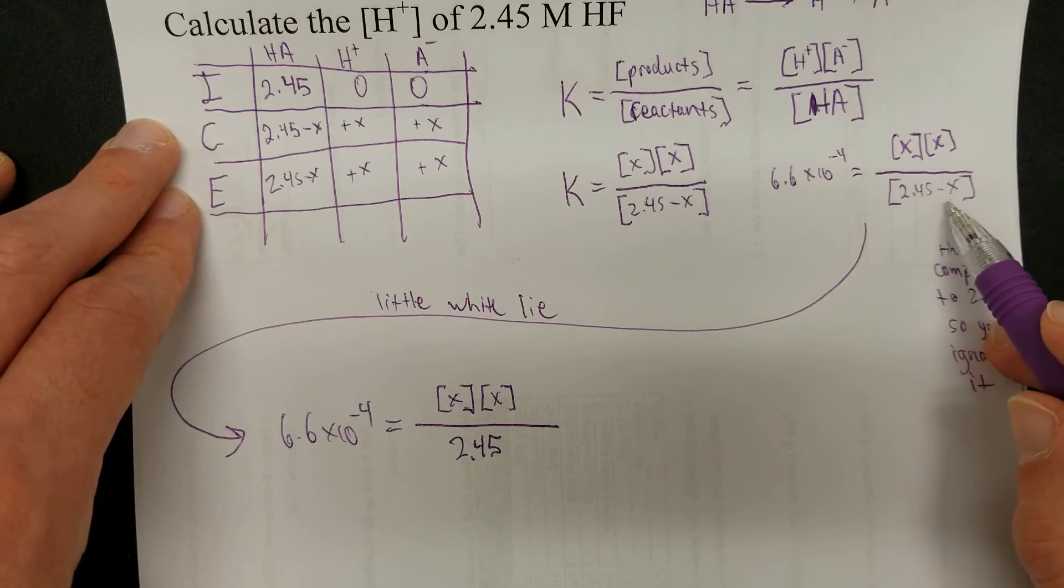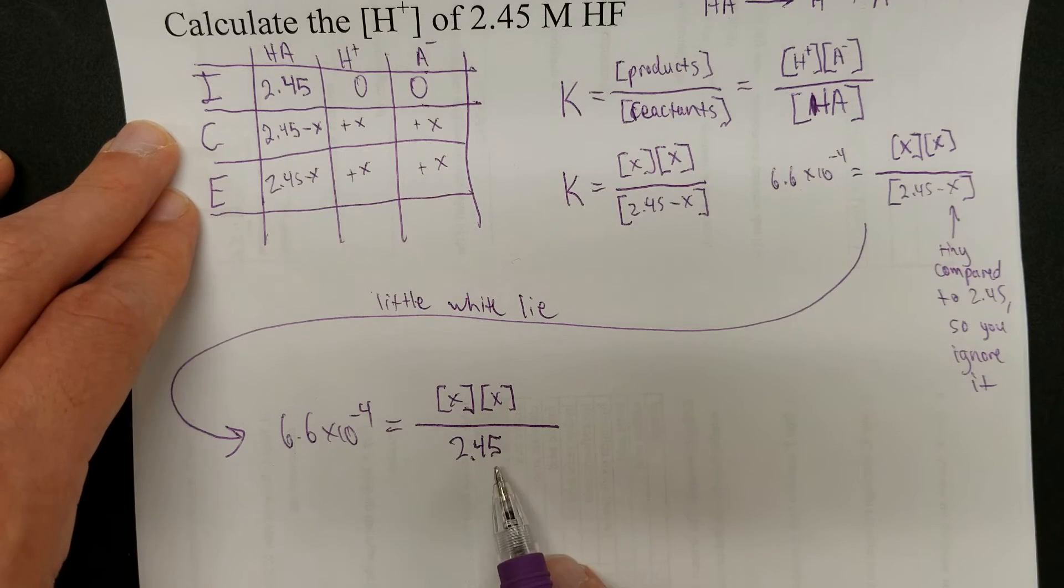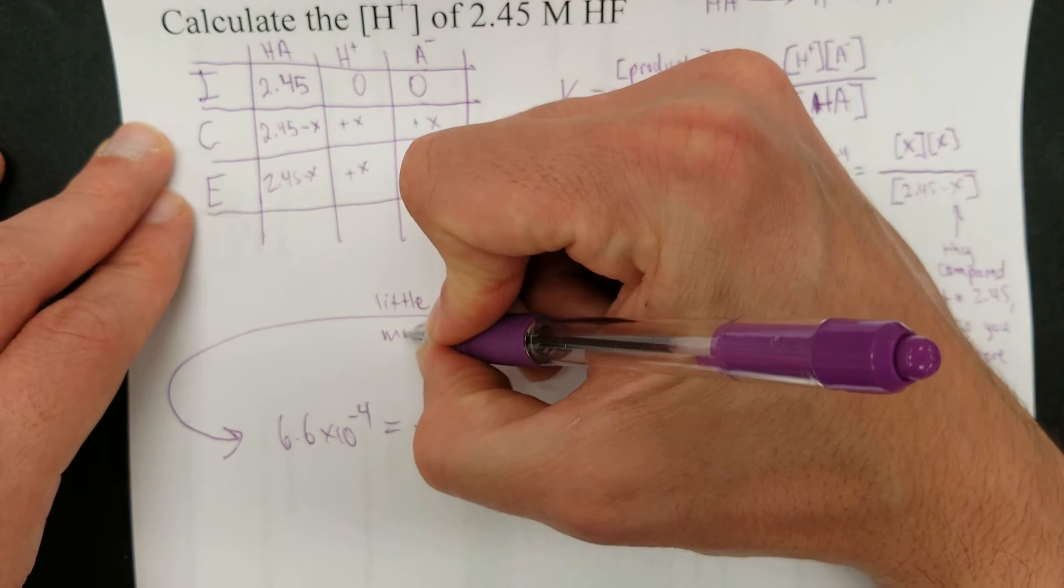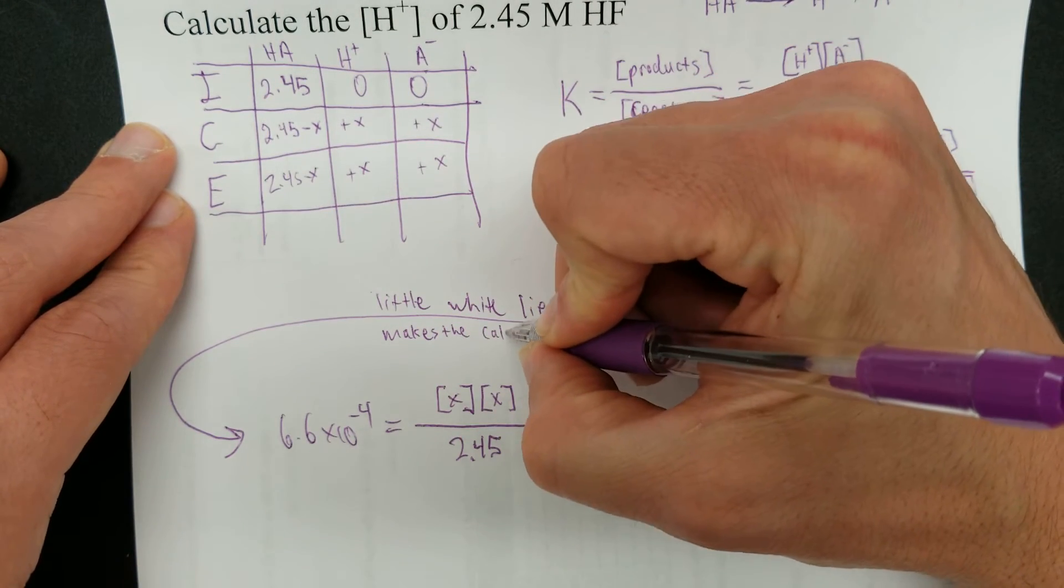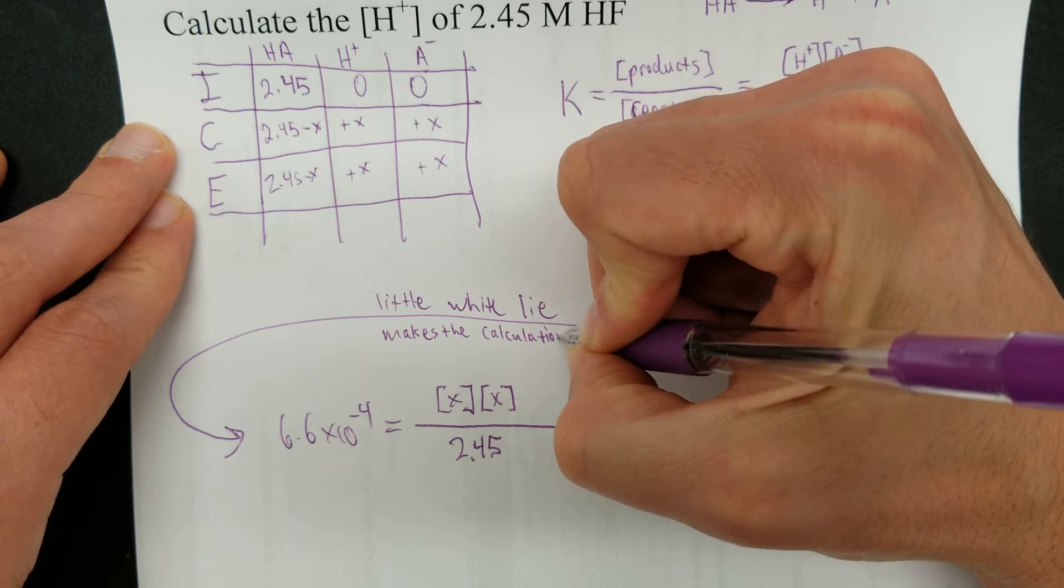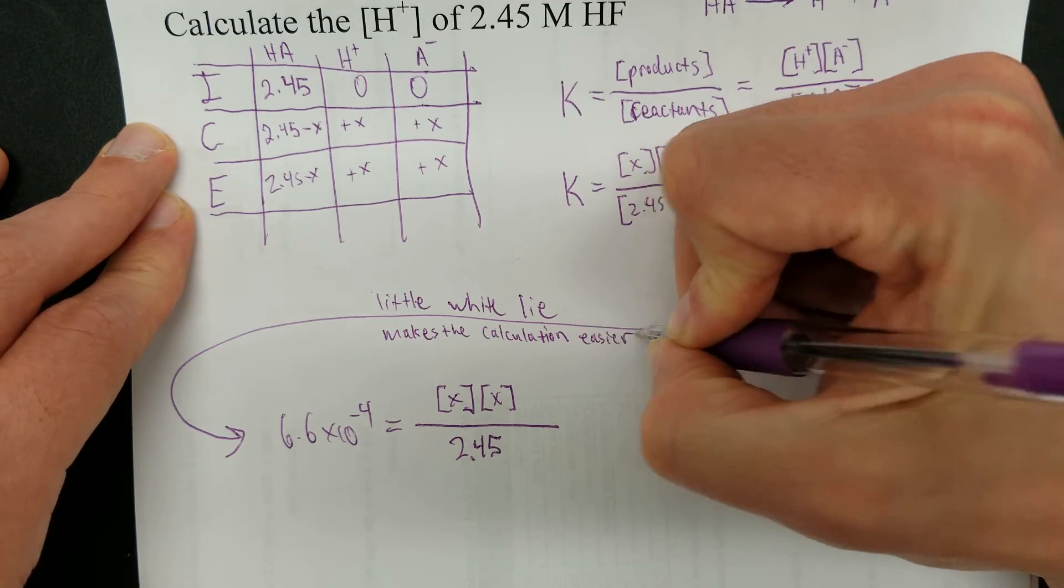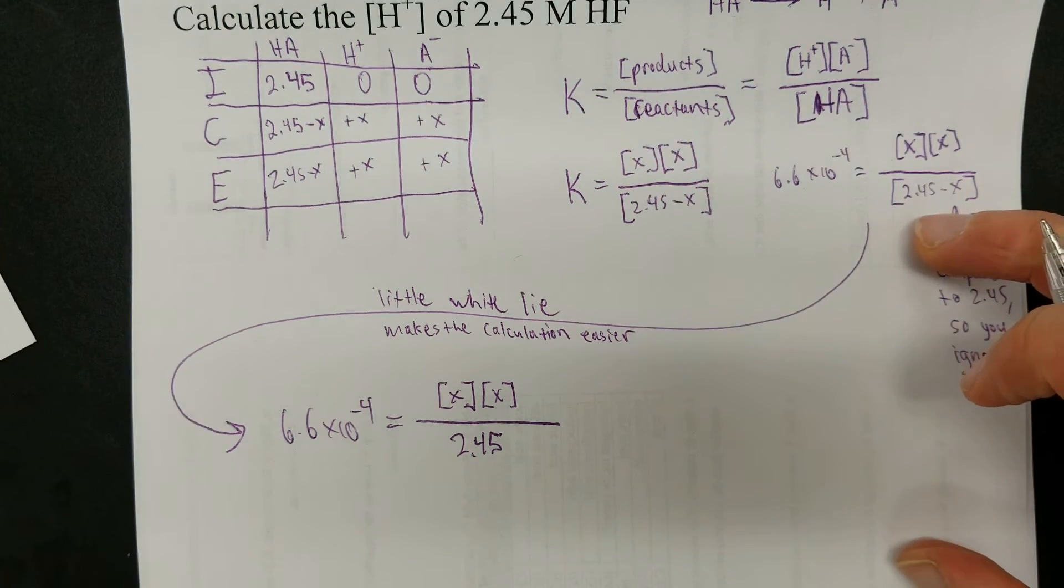The results, if you include this X, won't alter very much. Why do we bother doing this? Because it makes the calculation easier. Little white lie makes the calculation easier.